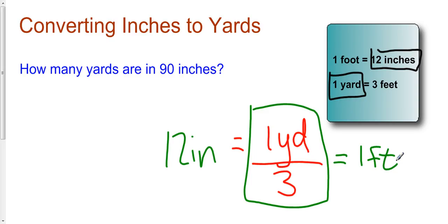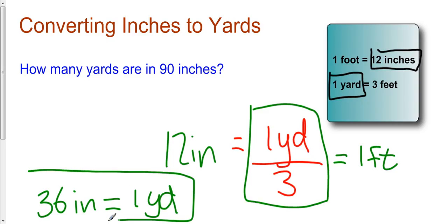And if I wanted to solve for one yard, well what do I do? I'm going to multiply both sides by three and I get 36 inches is the equivalent of one yard. Now I have a direct relationship between yards and inches.